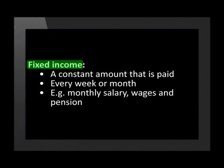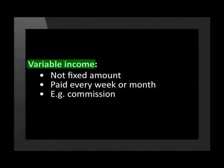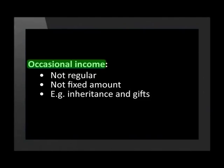It was interesting to see how Lebo and her friends manage their income and expenses. It's good to draw up a budget so that we always know how much money we have. Income is money that comes in. It can be grouped as either fixed income, variable income, or occasional income. Fixed income is usually a constant amount paid every week or month — a regular monthly salary, wages, and a pension are examples. Variable income is not a fixed amount but is sometimes paid every week or month; an example is commission earned by a salesperson. Occasional income is not regular nor always a fixed amount — examples include inheritance and gifts.